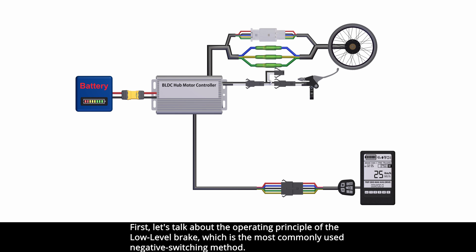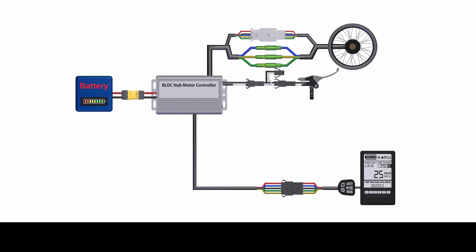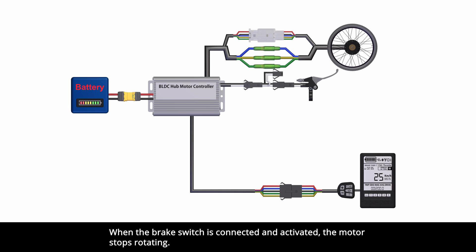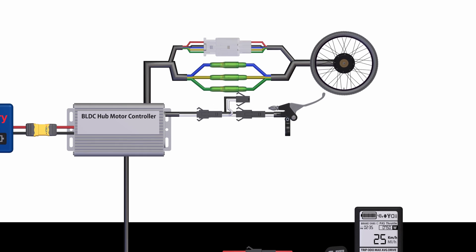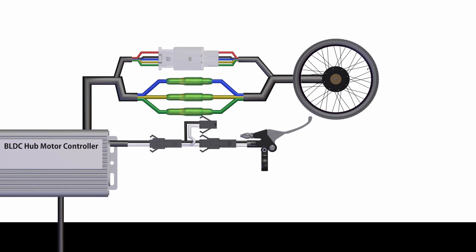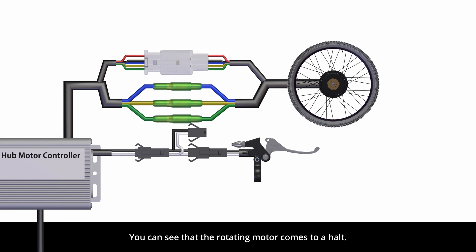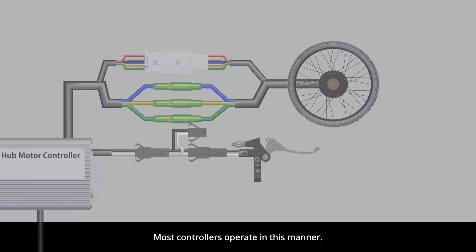First, let's talk about the operating principle of the low-level brake, which is the most commonly used negative switching method. When the brake switch is connected and activated, the motor stops rotating. You can see that the rotating motor comes to a halt. Most controllers operate in this manner.